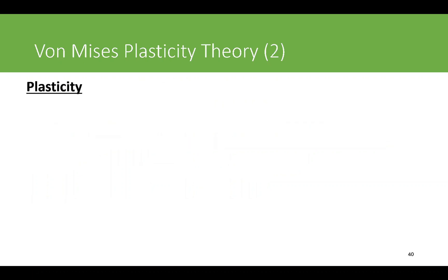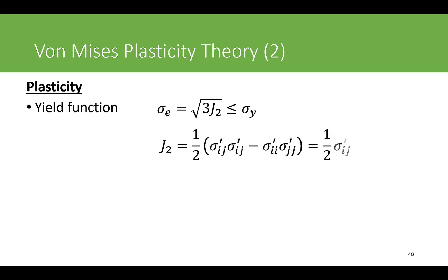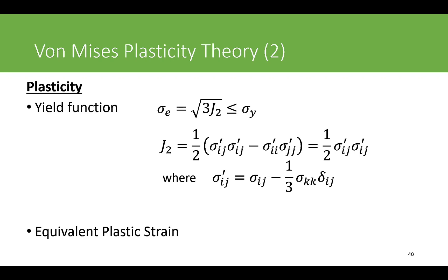Moving to the plasticity part, we first define the yield function. The Von Mises yield function is based on the maximum distortion energy theory and gives the criterion that the equivalent stress should be less than or equal to sigma_y. For non-hardening materials, the equivalent stress is given as the square root of three times J2, where J2 is the second invariant of the stress tensor. We also need to define the equivalent plastic strain to keep track of permanent deformation in the material, and for that we need to find the increments of equivalent plastic strain with respect to time.